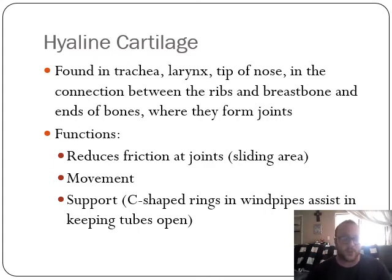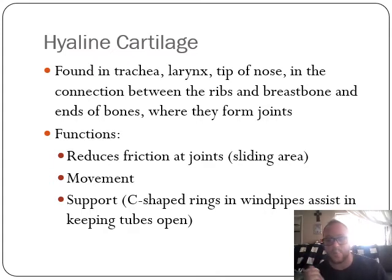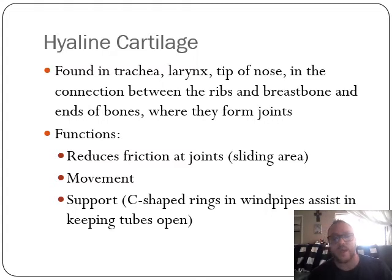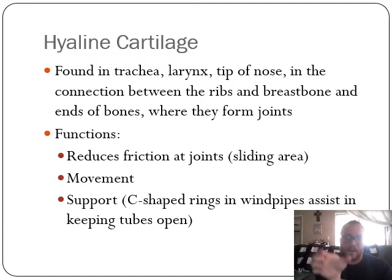The functions of hyaline cartilage: it reduces friction at joints - it's a sliding area, almost no friction, it will pop out of your fingers. They're also used for movement and support. The C-shaped rings in windpipes assist in keeping the tubes open - your muscles wouldn't be strong enough to force the airpipes back open without them. It's not a closed ring, just a C-shape, and this sits along the entire trachea. Inside the lungs there are also O-shaped rings keeping windpipes open.